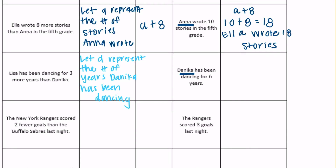Lisa has been dancing for three more years than Danica. So whatever Danica has been dancing, plus three would get us Lisa. So D plus three — or we can replace Danica. She's been dancing for six years, so six plus three is equal to nine. So Lisa has been dancing for nine years.